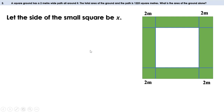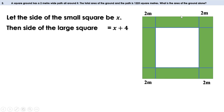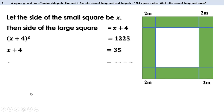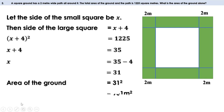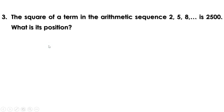The side of the large square (ground with path) is x + 4 meters, since 2 meters of path are added on each side. Given that the total area is 1225 square meters, we write (x + 4)² = 1225. Taking square root: x + 4 = 35, so x = 35 - 4 = 31 meters. Therefore the area of the ground is 31² = 961 square meters.